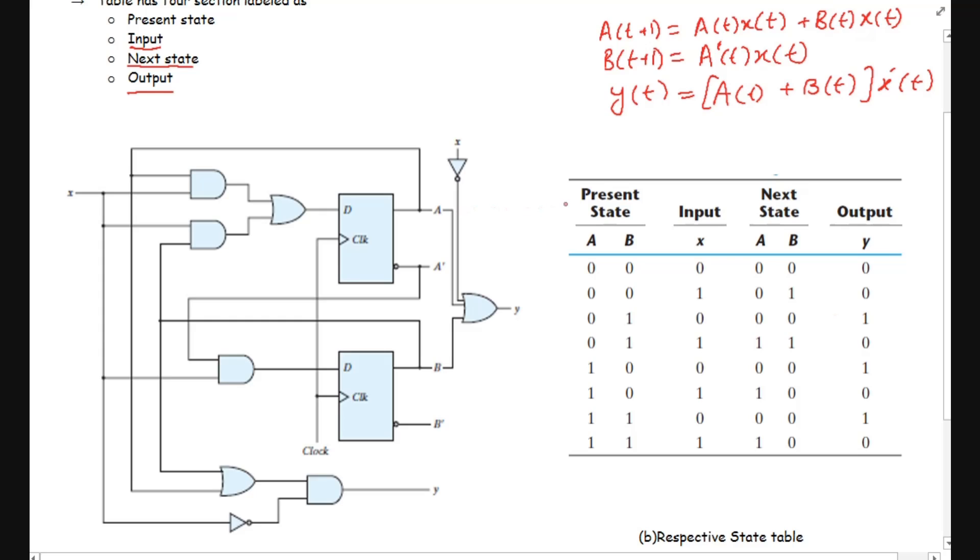Here is the state table for this example. We know that we have the present state A and B and the input 0 and 1. So we need to consider the present state 0 0 for input 0 and 1.